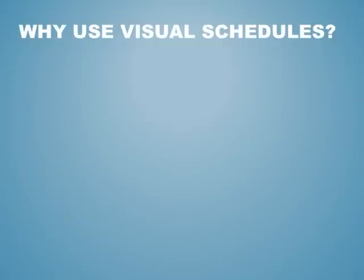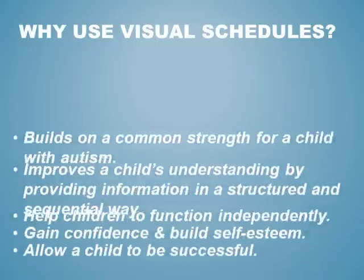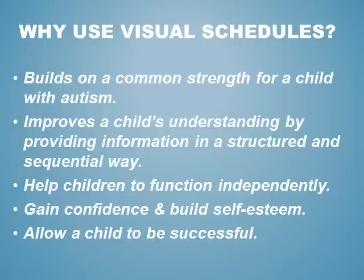So why use a visual schedule? A visual schedule is an evidence-based strategy or tool to use with children and adults on the autism spectrum. It's also a visual support strategy and visual communication strategy. Schedules allow students to feel comfortable and competent as they move through their day. The use of schedules makes the home, classrooms at school, and Sunday school classrooms run more smoothly, and children function more independently.